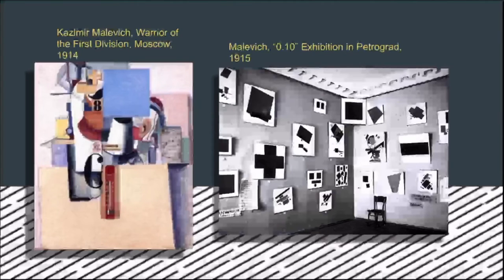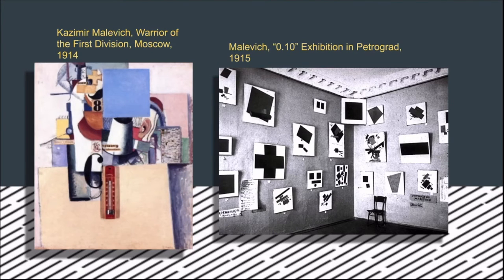In this piece on the left, Malevich was familiar with the Cubist art movement and you can really see a lot of Cubist influence — specifically the synthetic style of Cubism. He's using a real postage stamp and thermometer incorporated into this piece. The work on the right is from an exhibition he titled to convey that he felt he had reached ground zero.